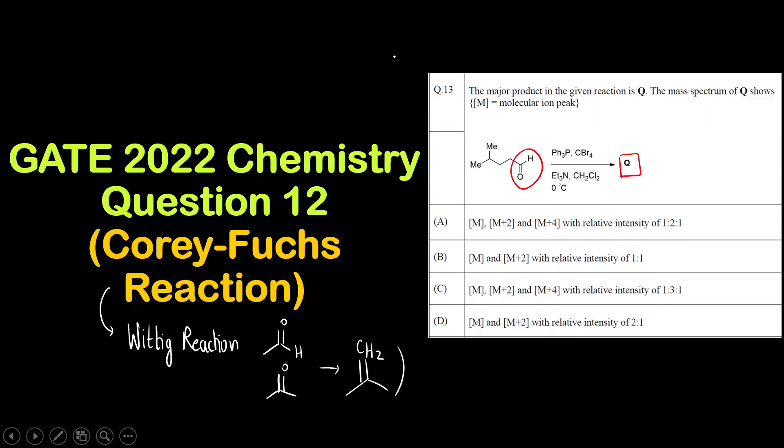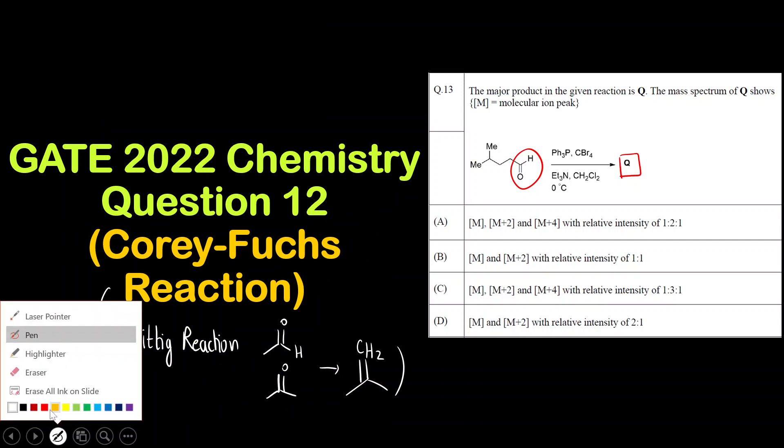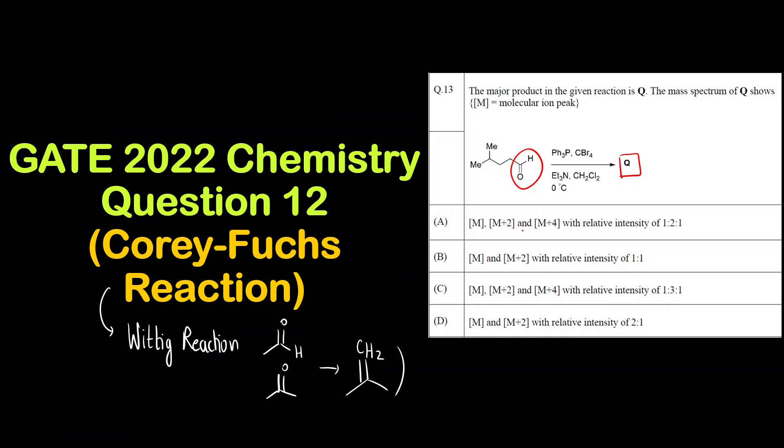Okay 1 into 1 is 1 plus 1 into 1 is 1. 1 plus 1 is 2 and this is 1 into 1. So if 2 bromine atoms are present then the ratio is 1 is to 2 is to 1. Okay so what is the correct answer? The correct answer is going to be M, M plus 2, M plus 4 with a relative intensity of 1 is to 2 is to 1. The correct answer is option A. I hope you have understood the mechanism of Corey-Fuchs reaction. Thank you so much.